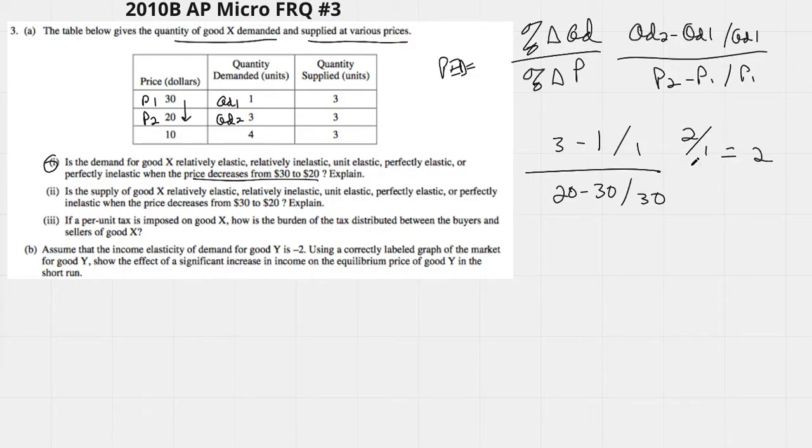3 minus 1 is 2 over 1 gives us, obviously, 2. It would give us a negative 2, but we know that PED values are all absolute values. So no negatives need apply.